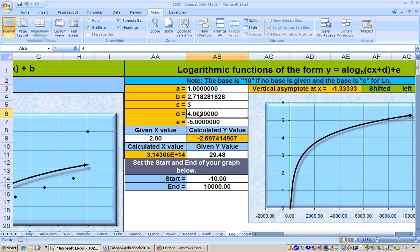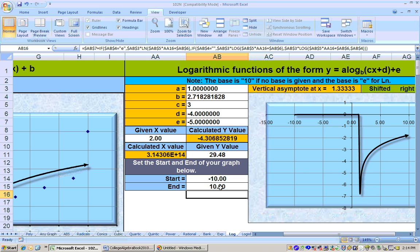But it does shift it. Let's do one where it shifts it to the right. Let's make this negative 4 here. And now what that should do is shift it to the opposite direction, shift it to the right. And I think it's because my end is out there so far, that's why I can't see it. Let's just go out here to 10.